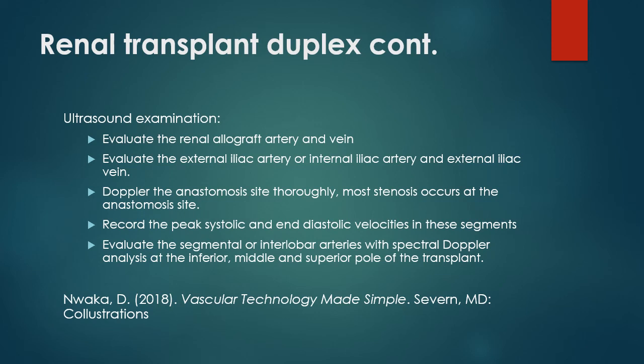Ultrasound examination of a renal transplant: evaluate the renal allograft artery and vein, the external or internal iliac artery and external iliac vein, and doppler the anastomosis site thoroughly, as most stenosis occurs at the site of anastomosis. Record peak systolic and end diastolic velocities. Evaluate the segmental or interlobar arteries with spectral doppler at the inferior, middle, and superior pole of the transplant.